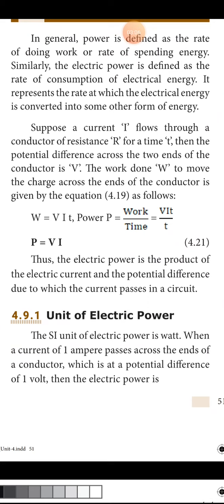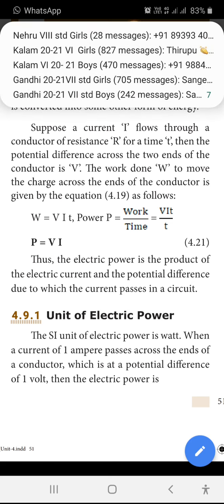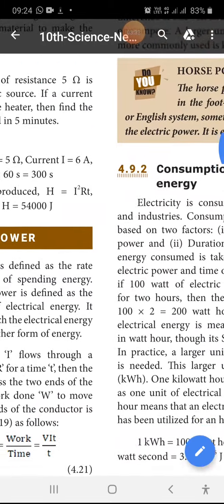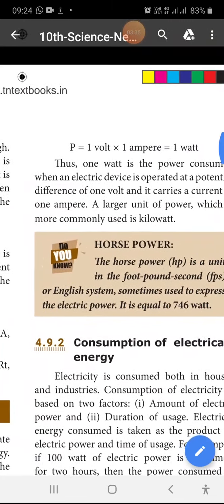What is power? The SI unit of power is watt. When a current of 1 ampere passes across the ends of a conductor which is at a potential difference of 1 volt, then the power is 1 watt.